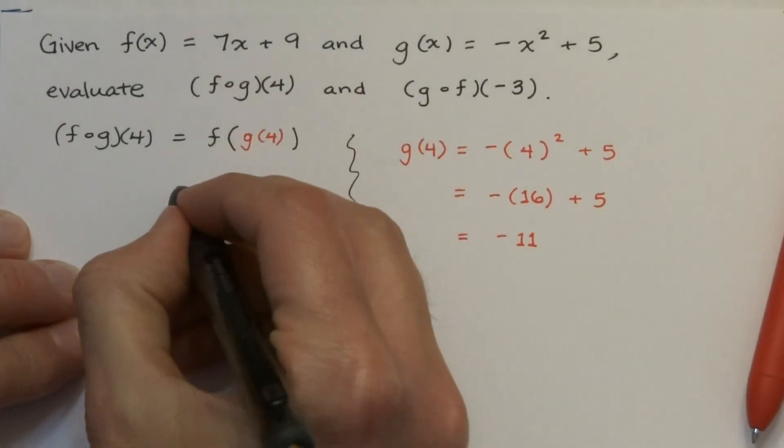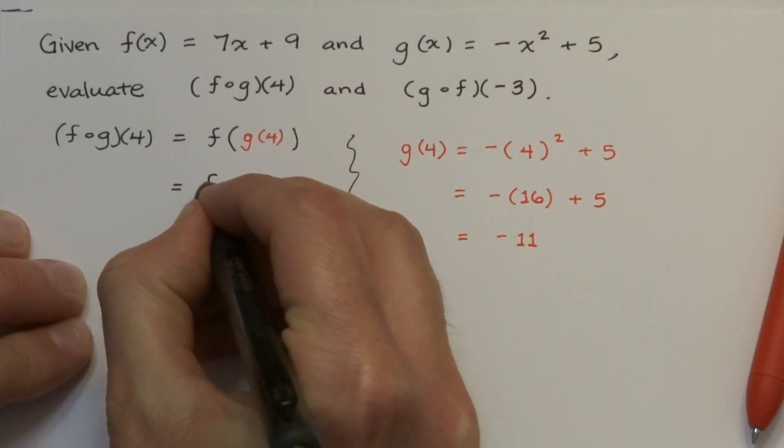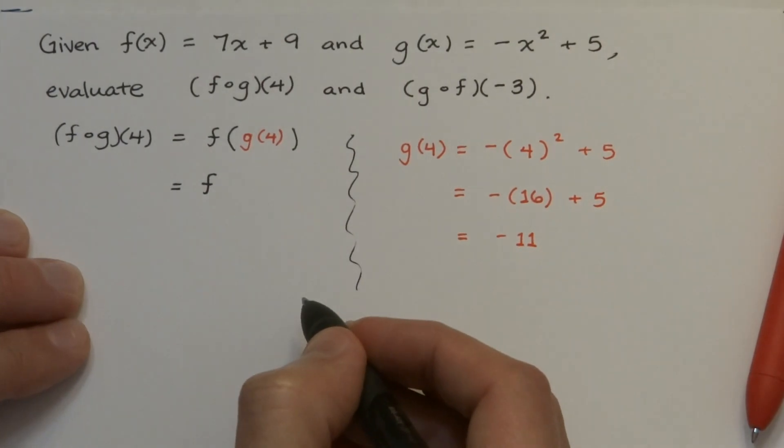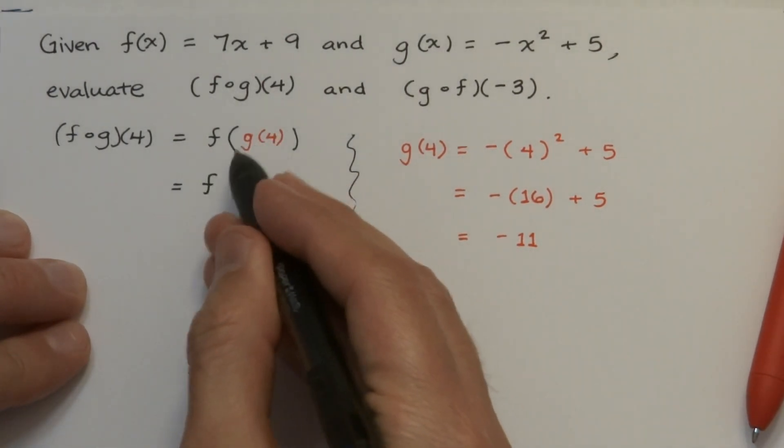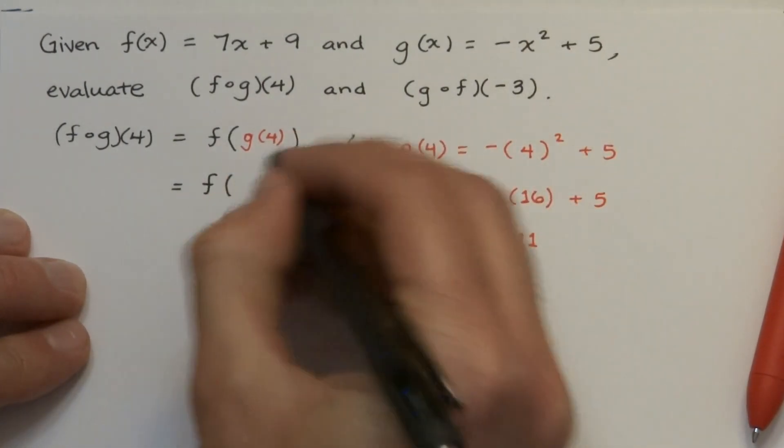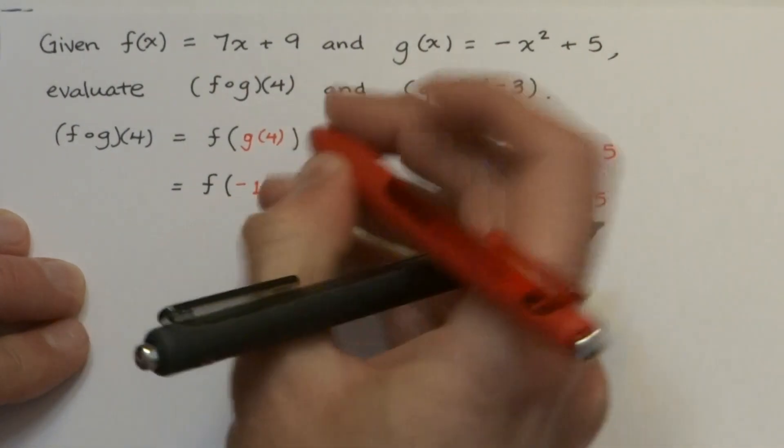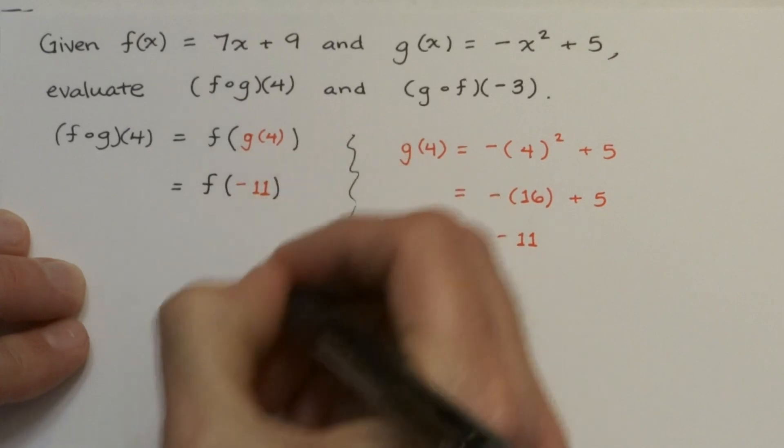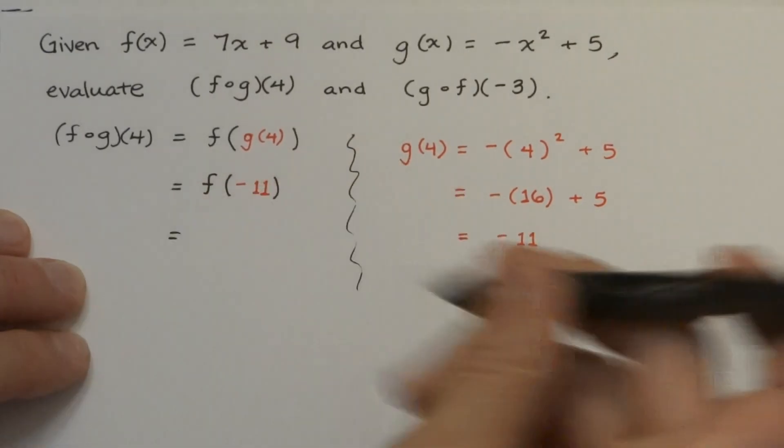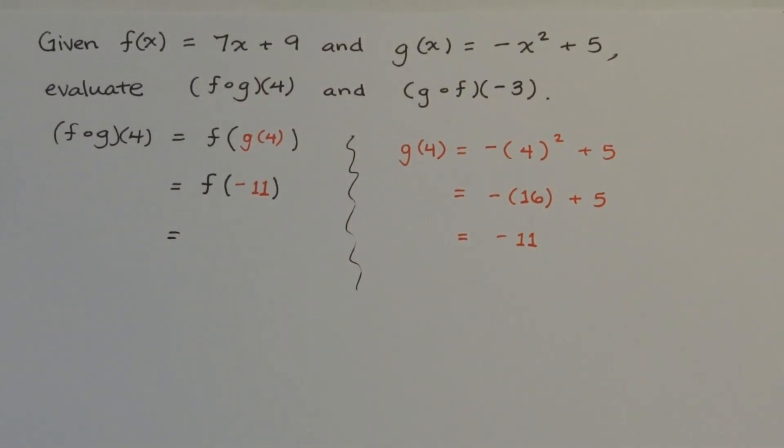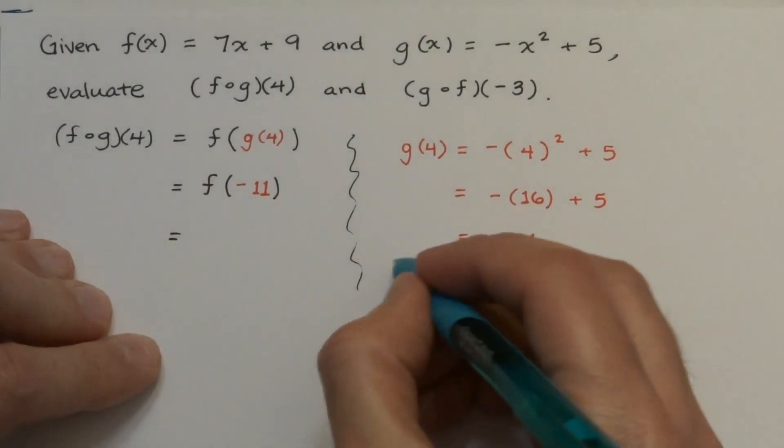So that is what's going to go inside here. So before we can evaluate f, we have to evaluate g at 4. So now we're going to do f of negative 11, and we can work out f of negative 11 off to the side, just like we did g of 4.